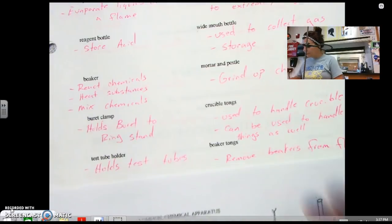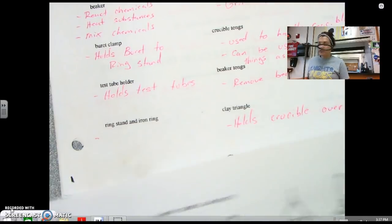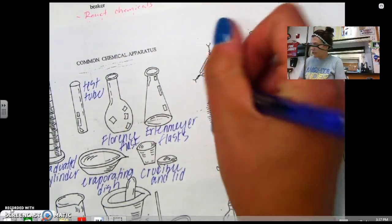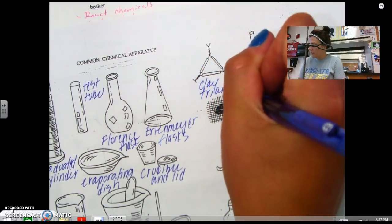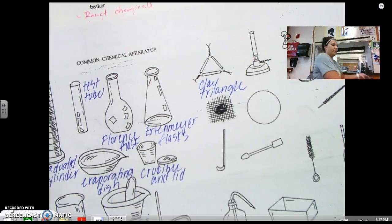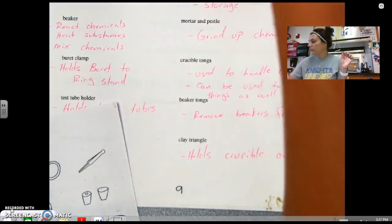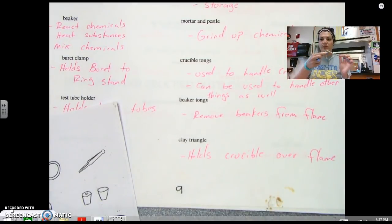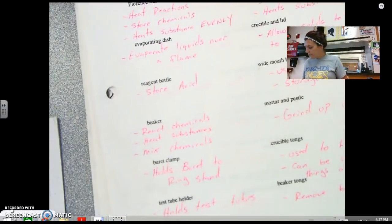So a ring stand, obviously you can write your own definition for that. This guy up here is what I was just talking about. This is a clay triangle. Let me move this out of the way. Clay triangle. Clay triangle holds crucibles in place, so it holds a crucible over the flame. Obviously this is clay because we don't want the metal to burn. Never pull a crucible off after you've been heating it because it's going to hurt your hands.